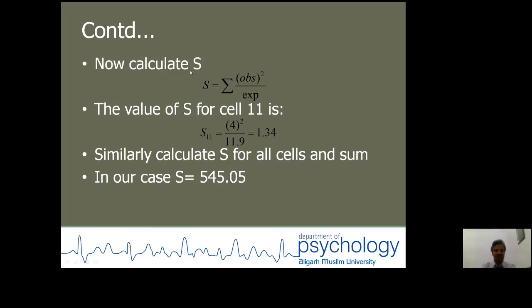Now calculate S. S is equal to the summation of observed squared divided by expected. For each cell, the value of S is to be calculated — both the observed value and expected value for each cell are given. After calculating the value of S for each cell, sum all values. In our case, S is equal to 545.05.